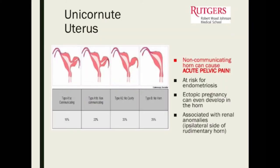Remember that one of the acute causes of pelvic pain can be a non-communicating horn in a unicornuate uterus — it fills up with blood with each menstrual cycle but doesn't shed, so it distends and causes pain. This is rare, but important to think about in your differential.